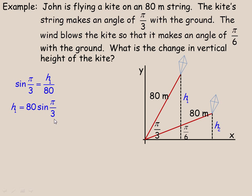So H1 is 80 sine π/3. So we look back to the unit circle to find that the sine of π/3 is √3/2. And so if we multiply these, now the 2 would divide into the 80, giving us 40√3. So that's the exact value for the H1 height, the initial height.